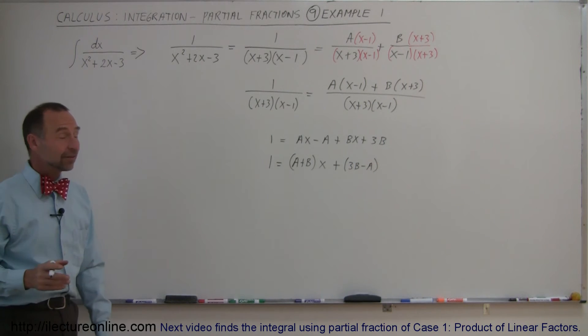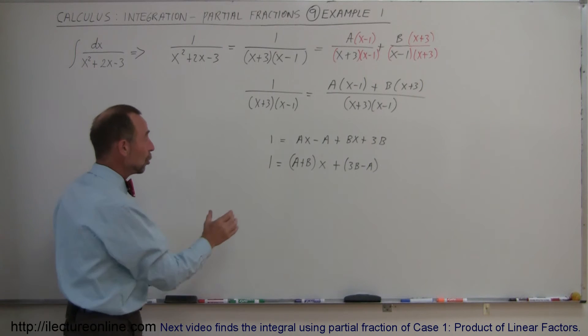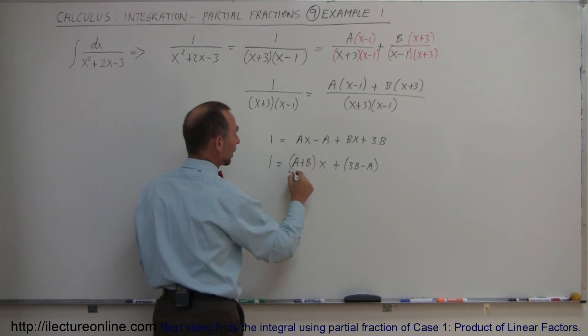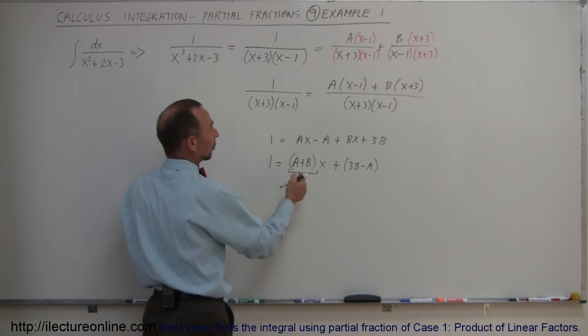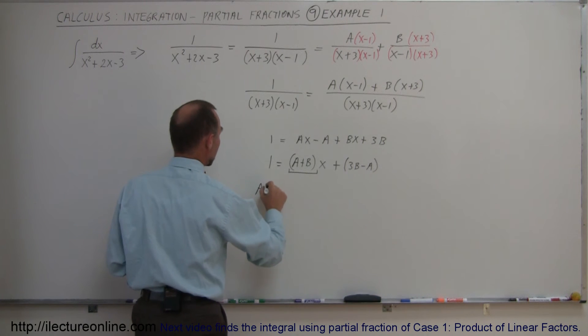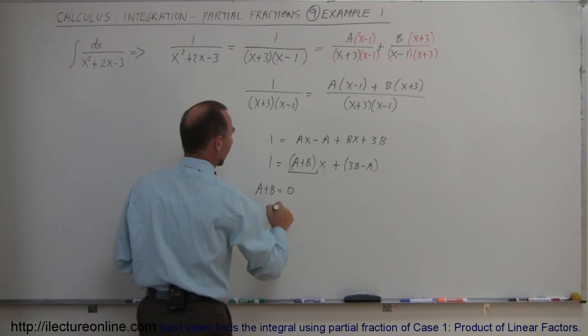So now the next thing is I can realize that there's no x term on the left side, there's an x term on the right side, which means there's no corresponding term on the left side to compensate for this one here. So that means that this right here has to be equal to 0, because 0 times x will give me 0x on the left side. That means that A plus B must equal 0.